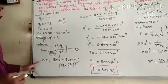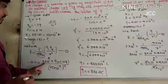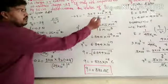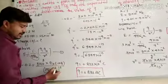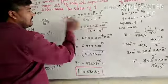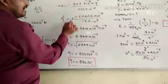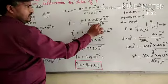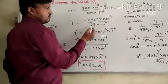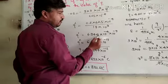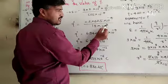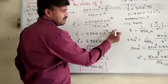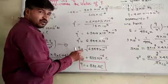Then calculate, minus 0.2 equal to 9 into 10 raise to 9 into minus 2Q into Q, Q square divided by 25 into 10 raise to minus 4. Minus 2 into 2 is minus 4. Then calculating the Q value.